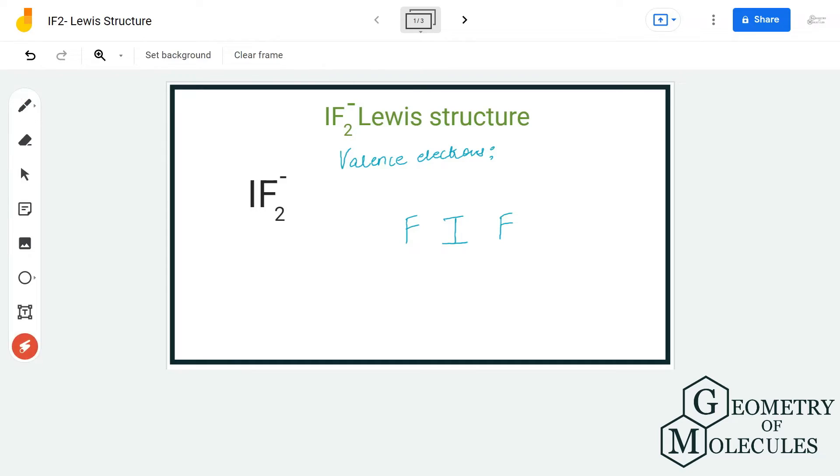Hi guys, welcome back to our channel. In today's video we are going to help you with IF2 minus Lewis structure. It is an anion because it has an additional electron.